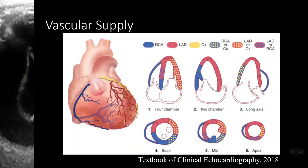When dealing with ischemic changes, the heart is more traditionally divided into the distribution of the three major cardiac arteries: the left anterior descending, the circumflex, and the right coronary artery. There is significant overlap in the vascular distributions, especially in the lateral wall which can be supplied by the LAD or the circumflex, the septal wall which can be supplied by the LAD and/or the RCA, and the inferior wall which is supplied by the RCA and/or the circumflex.